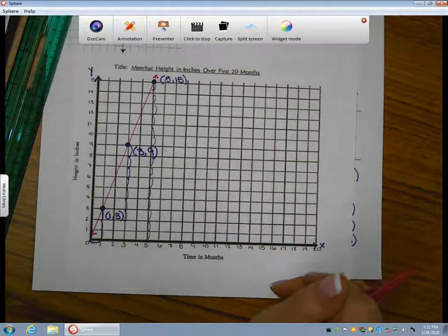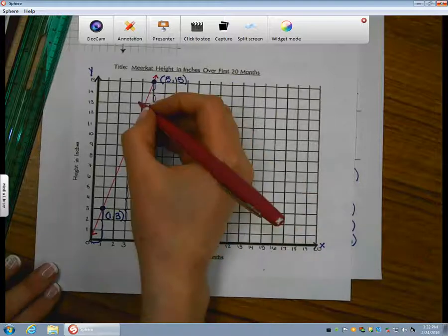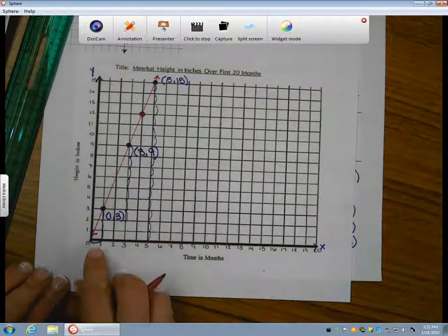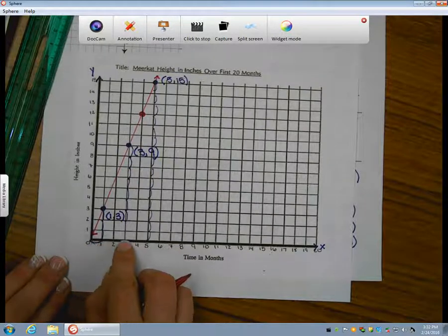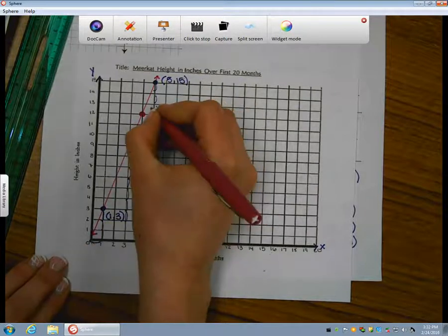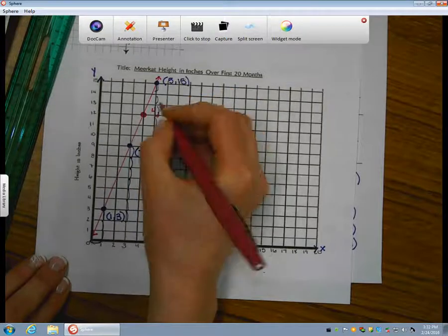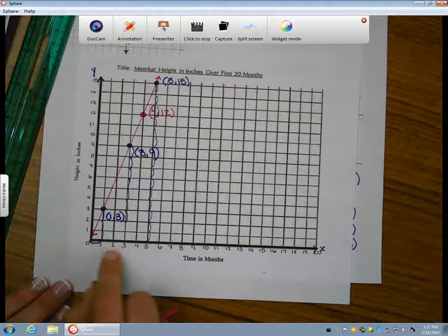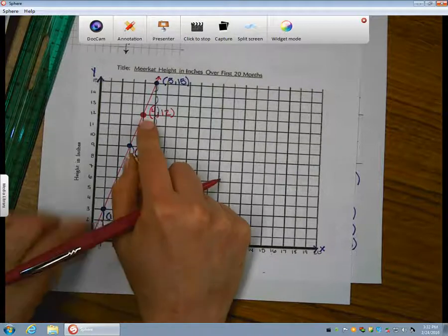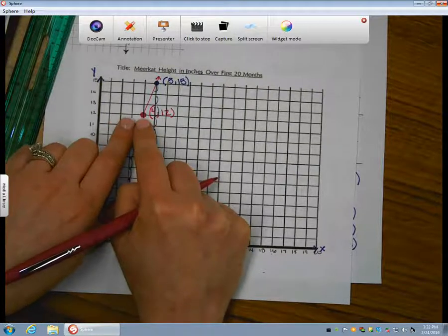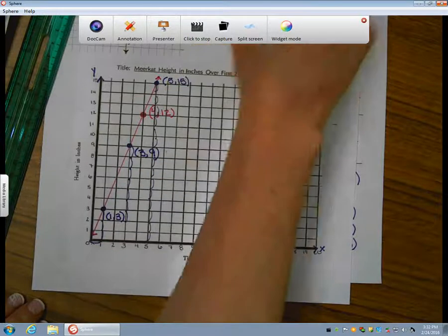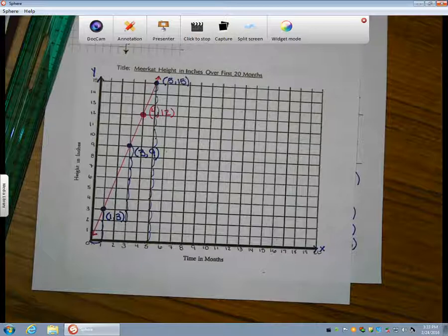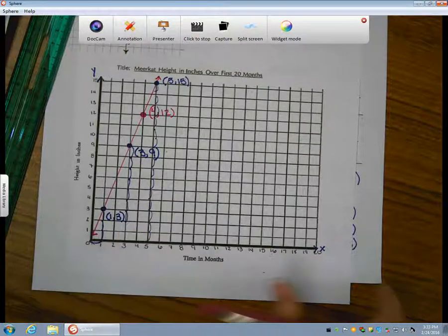I drew this straight line because it allows me to make some predictions about the meerkat's height. For example, right here, I can see that my line crossed through the point 1, 2, 3, 4, comma 12. That allows me to make the prediction that in four months of life, the meerkat will be 12 inches tall. By extending this line, I can find a lot more values and a lot of heights for this meerkat at different ages without doing all of that math and substitution.